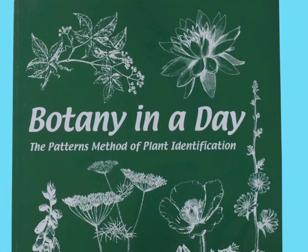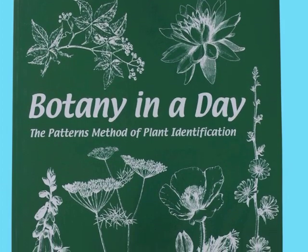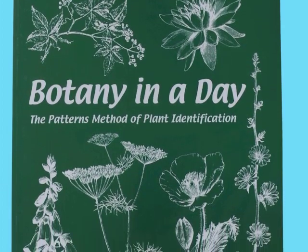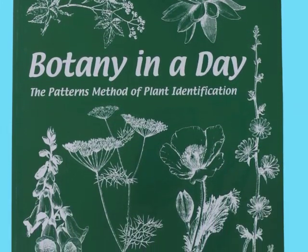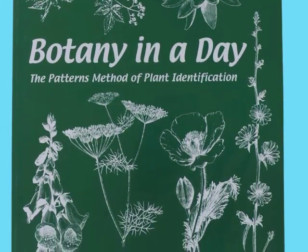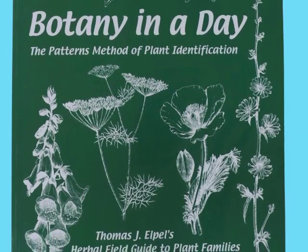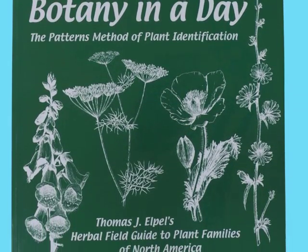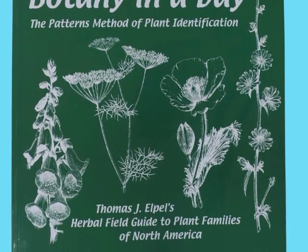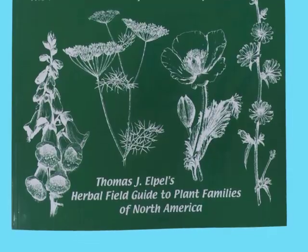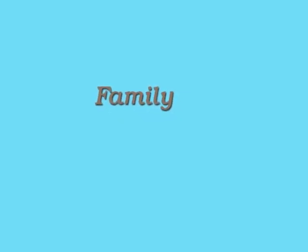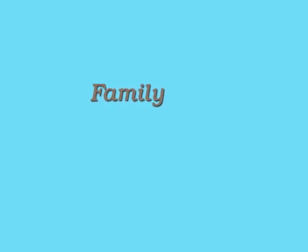Botany in a Day uses a patterns method to identify a plant. With this approach you first determine the family in which a plant belongs. This narrows down the subsequent number of plants to look through for your unknown plant, because you will only need to look through a field guide organized by families at the plants in that one family.